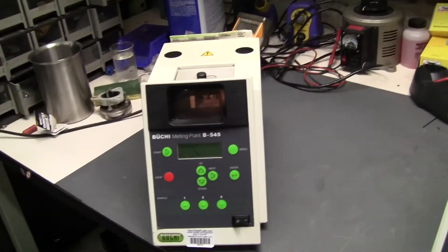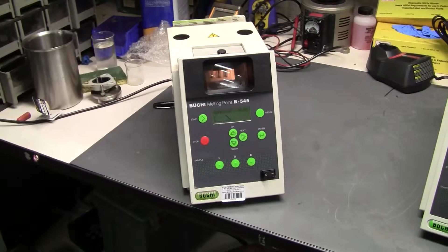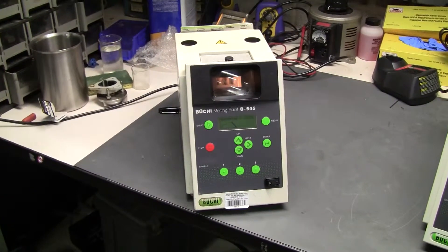Hi, this is Michael from HitechTrader. Today we're looking at a Büchi Melting Point Apparatus, model number B545.